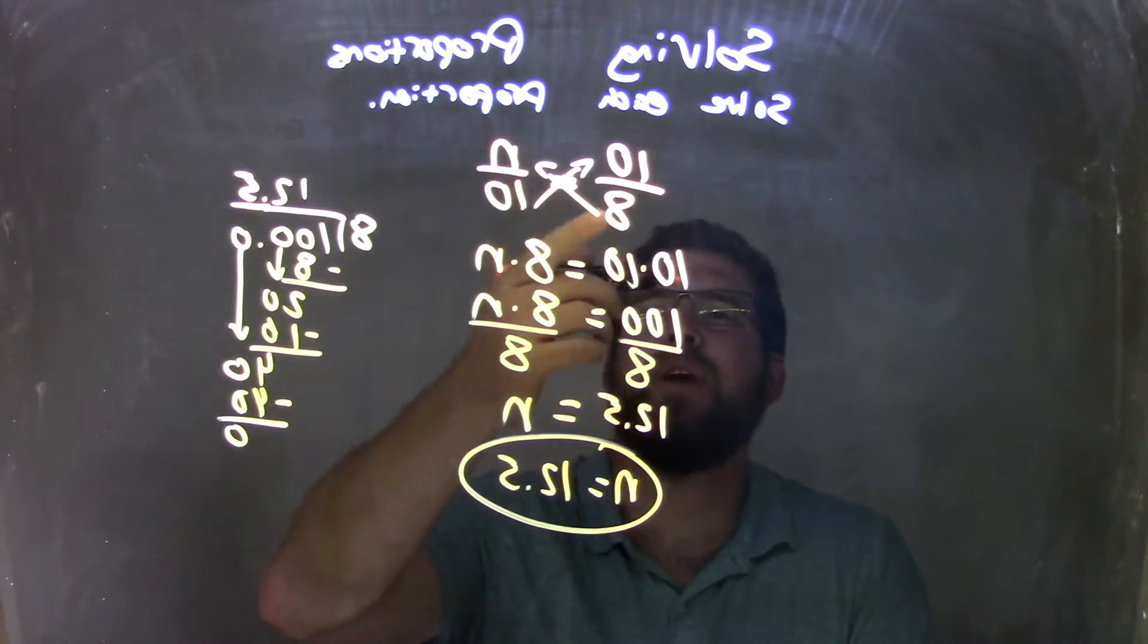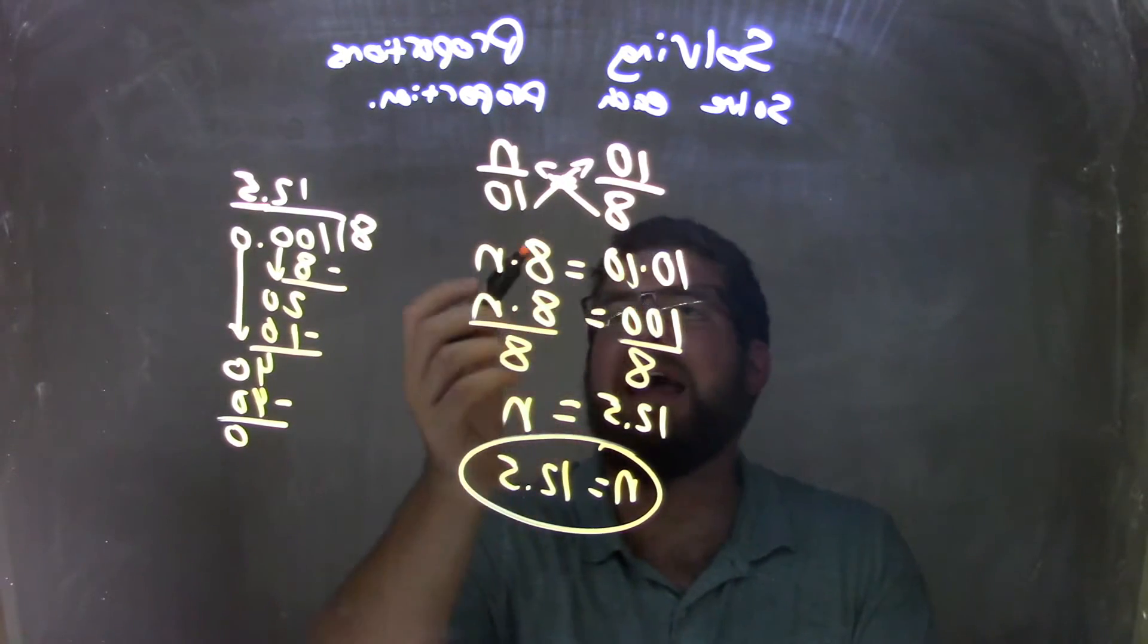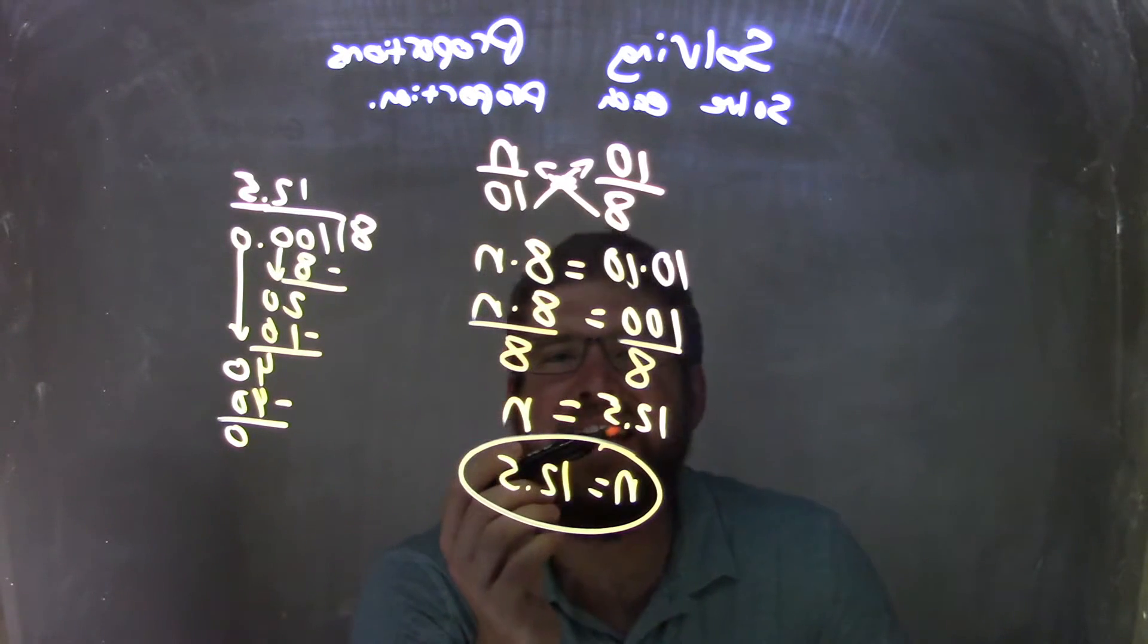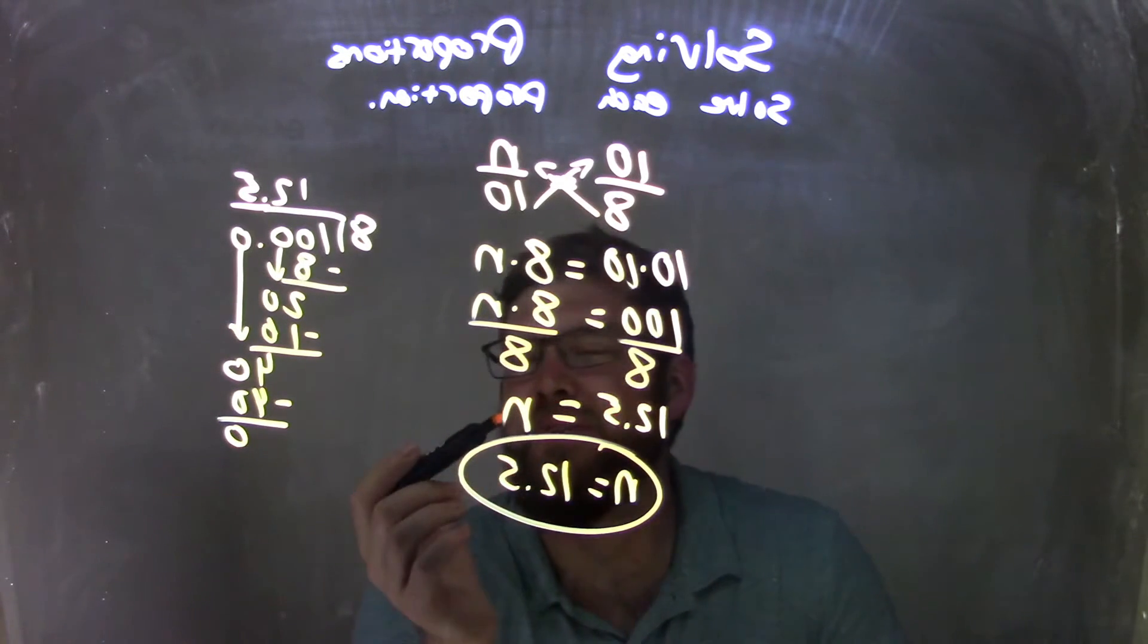So let's recap. We're given 10 over 8 equals n over 10. We cross-multiply that. 10 times 10 is 100. 8 times n is just 8n. And then I divide by 8 to both sides, leaving me with 100 divided by 8 equals n.